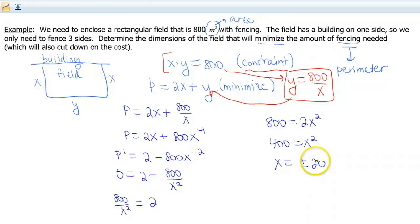So then x is gonna equal technically plus or minus 20. But obviously we're gonna be working with a real world situation here. So how can you have a negative 20 meters? So we'll just say this is 20 meters.